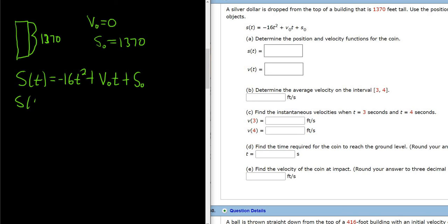So our position function, s(t), is equal to negative 16t squared. v naught is 0, so that part goes away, plus 1,370. Boom, there it is. There is our position function, so that will be the answer right here for s(t).